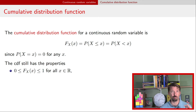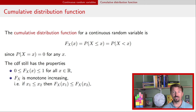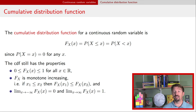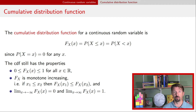The CDF has the same properties as before: it is always a value between zero and one, inclusive. It is always a monotone increasing function, meaning it never goes back down as you move to the right on the x-axis. And taking limits to the left and to the right gives zero on the left and one on the right. So exactly the same as we had for discrete random variables.